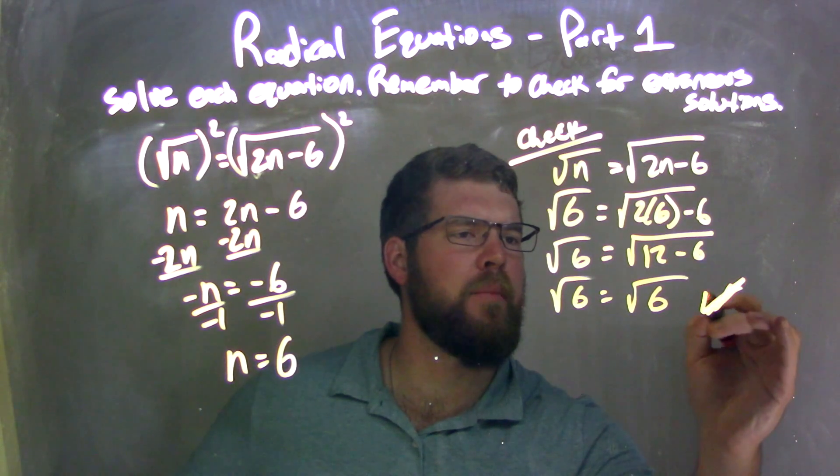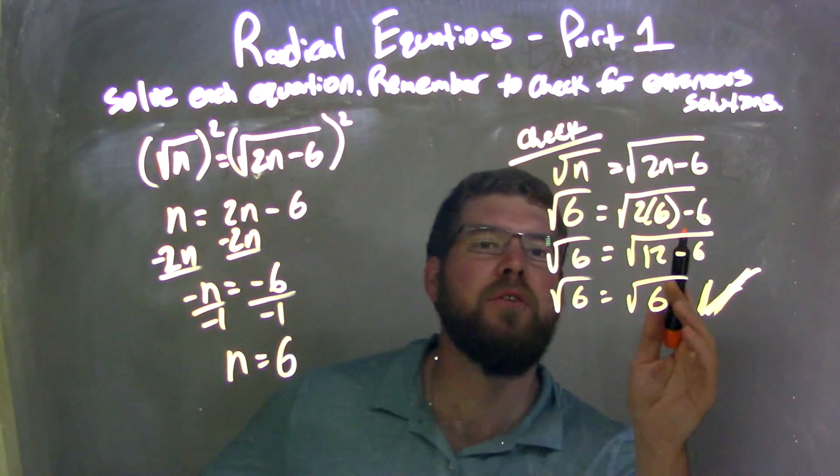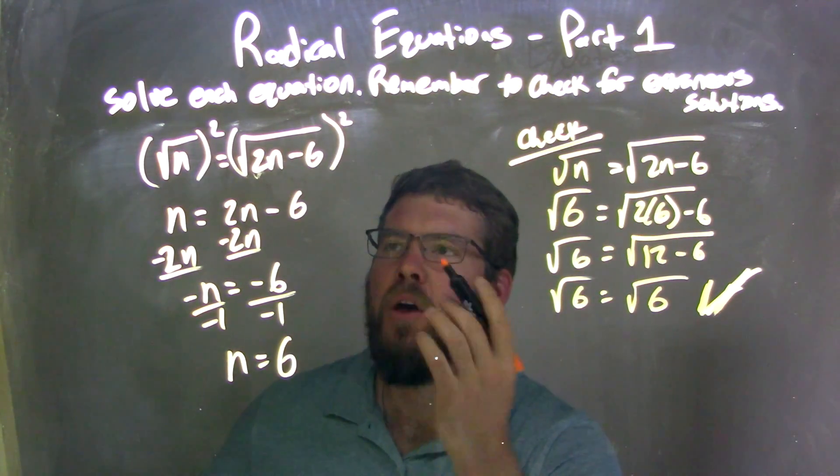We are, let's make a better check. Yeah, big old check. It's good. Confirming we have no extraneous solutions, and n equals 6 is my true and final answer. So let's recap.